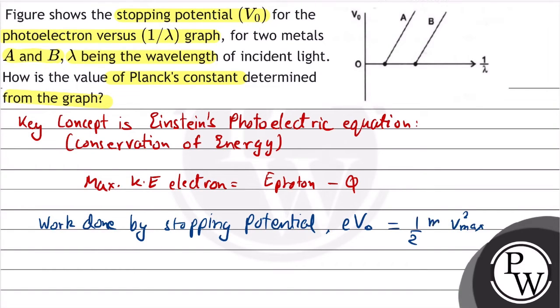That means the maximum kinetic energy of electron is equal to eV0. So we have to replace it in Einstein equation. So we get eV0 equals E photon minus phi.